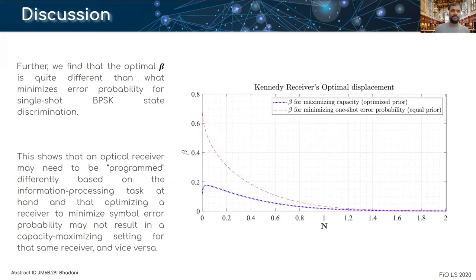Further we find that the optimized displacement is quite different than what minimizes the error probability for single-shot BPSK state discrimination.